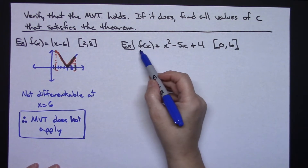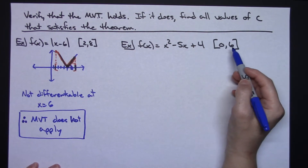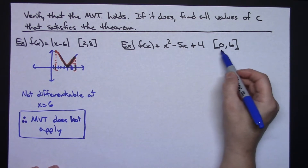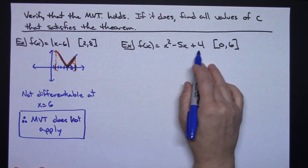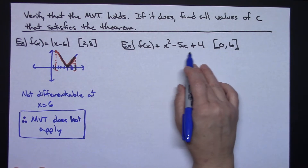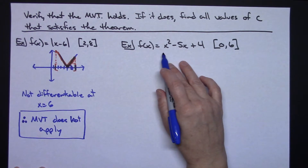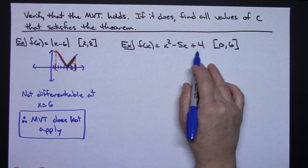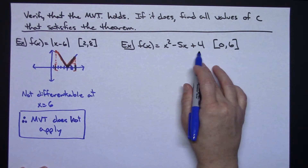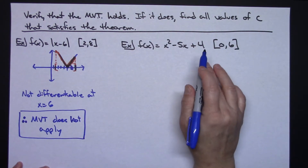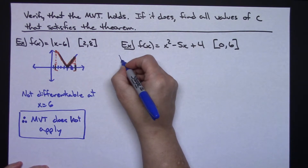For my second example, I've got f of x equals x squared minus five x plus four, and we're looking on the closed interval from zero to six. Let's take a look at that function. Hopefully you recognize this as a polynomial curve. All polynomial curves are smooth and continuous everywhere, and therefore they are differentiable everywhere. So on this one, I can verify very easily that the theorem is going to apply.